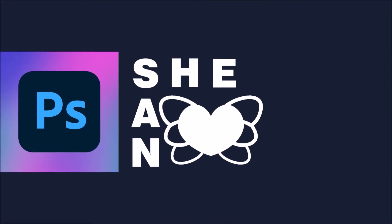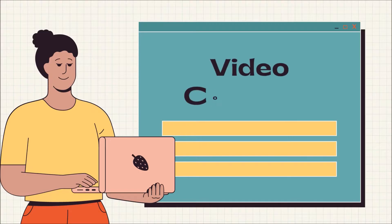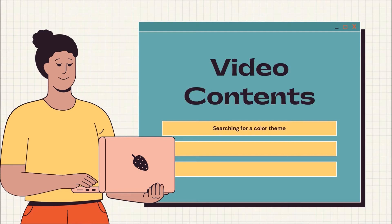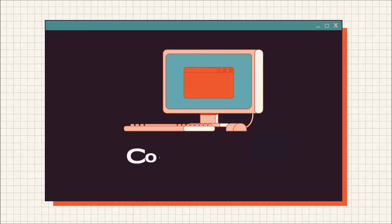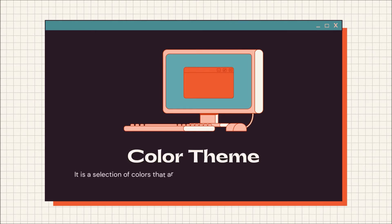Gradients background tutorial by Shisan. Here are the video contents: searching for a color theme, creating a gradient background using Photoshop, using Illustrator, and contributing the file to Canva. A color theme, as you probably know, is a selection of colors that are used for various artistic and design needs. Now let's search for a color theme — go to your browser.